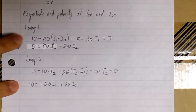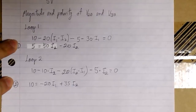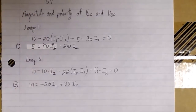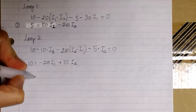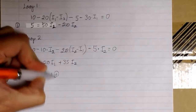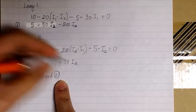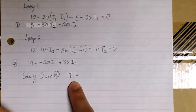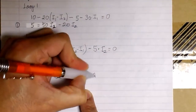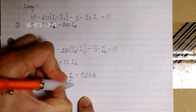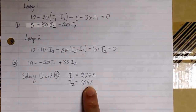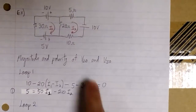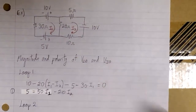So we have equation 1 and equation 2 with two unknowns I1 and I2. Solving these two equations, we get I1 is equal to 0.27 amps and I2 is 0.44 amps. We're going to use these loop currents to find the real currents in the circuit and determine the magnitude and polarity of V30 and V20.